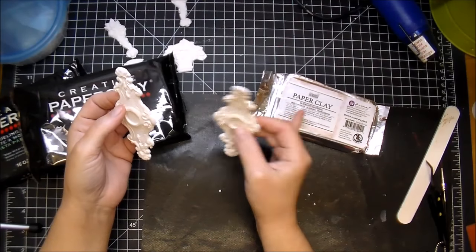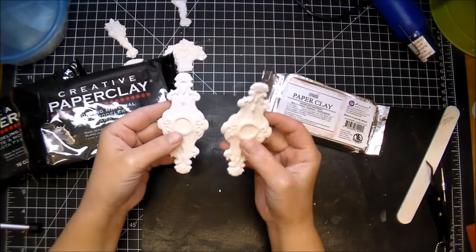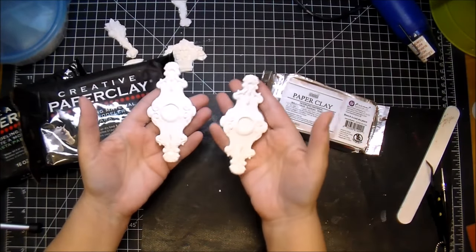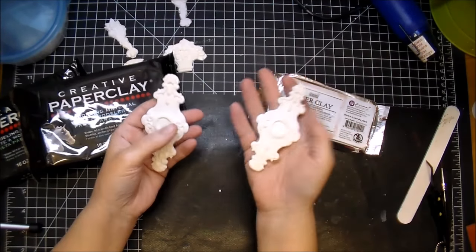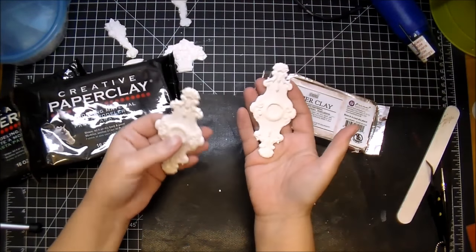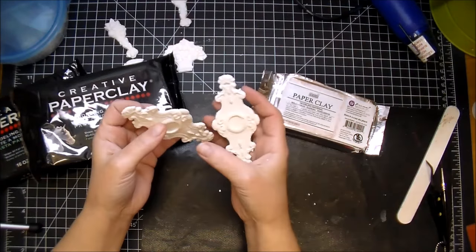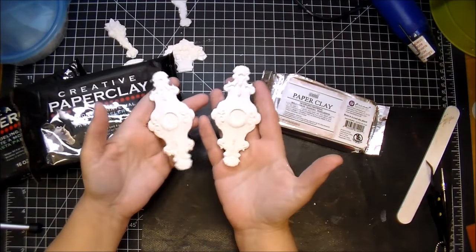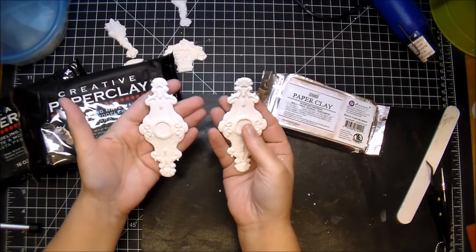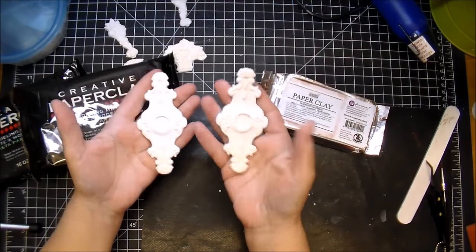This one, the IOD by Prima is probably double or triple the weight. Maybe triple the weight when it's done. This has a good little weight to it. This is like paper thin. I could easily snap it in half. So if you're looking for something a little bit more durable, you definitely want to try the Prima.